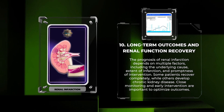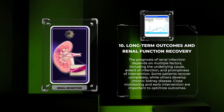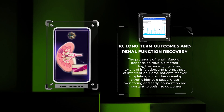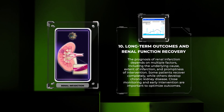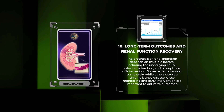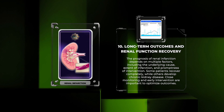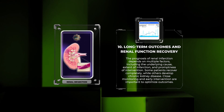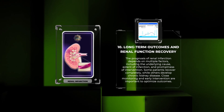The prognosis of renal infarction depends on multiple factors including the underlying cause, extent of infarction, and promptness of intervention. Some patients recover completely while others develop chronic kidney disease. Close monitoring and early intervention are important to optimize outcomes.